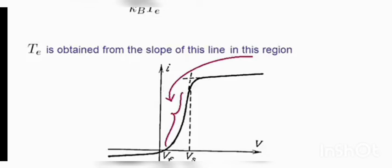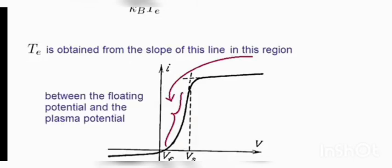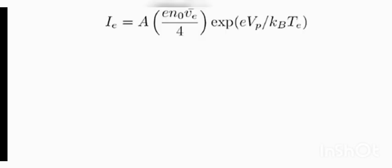Now let us look at the I-V curve once again. We can obtain the electron temperature by using this equation, and we can see the electron temperature can be taken from the slope of this line, but it has to be in the region of the I-V curve between the floating and the plasma potential.